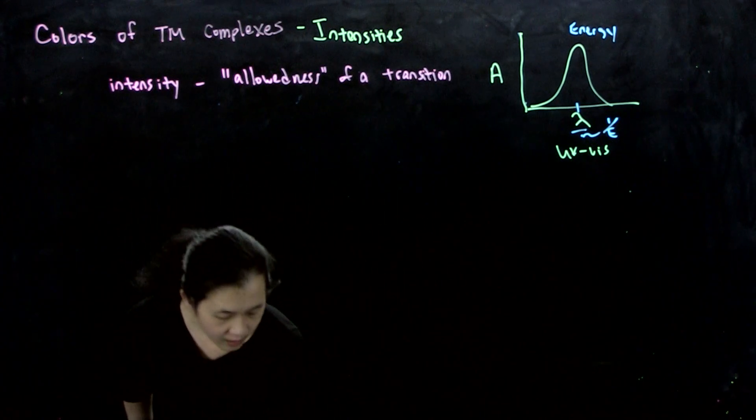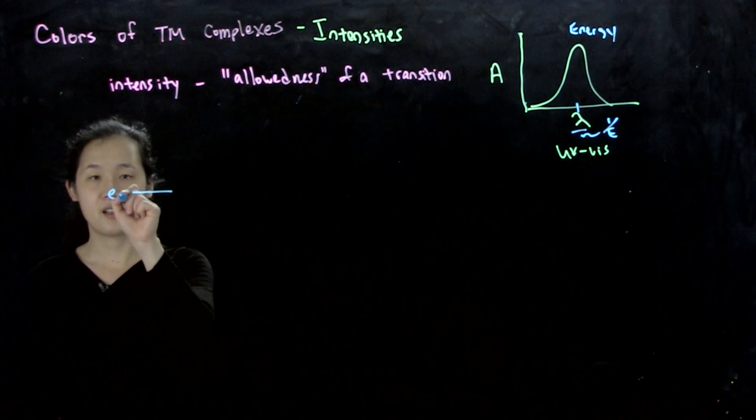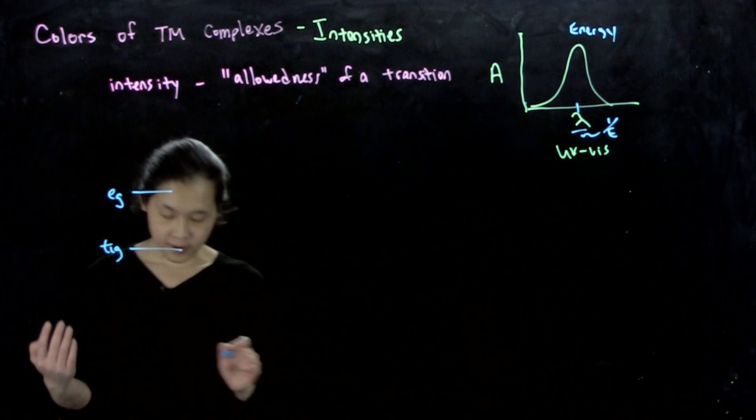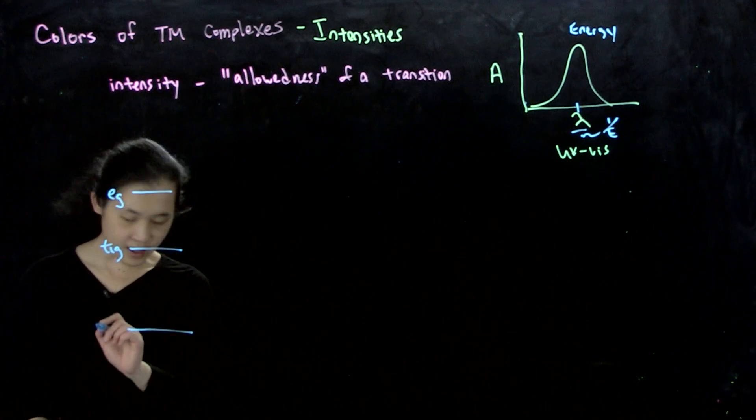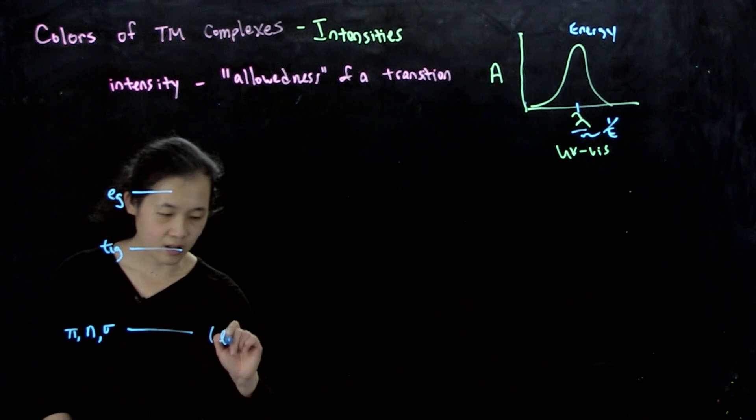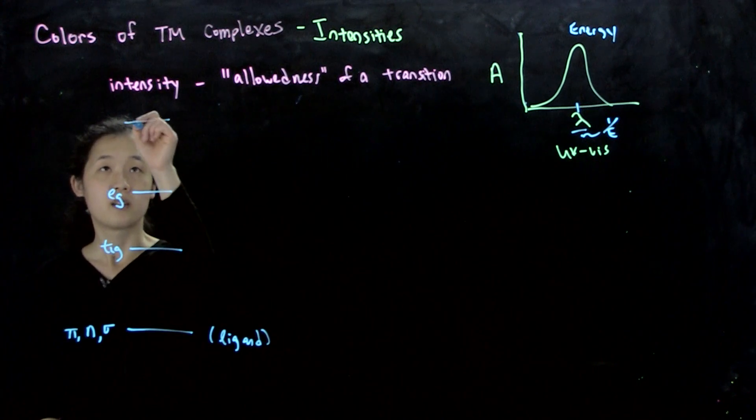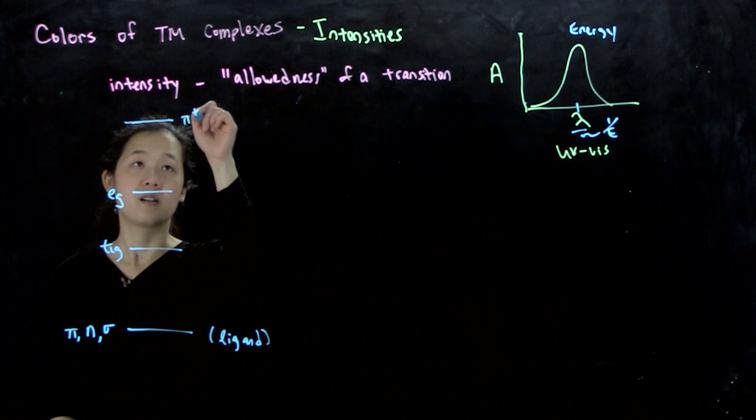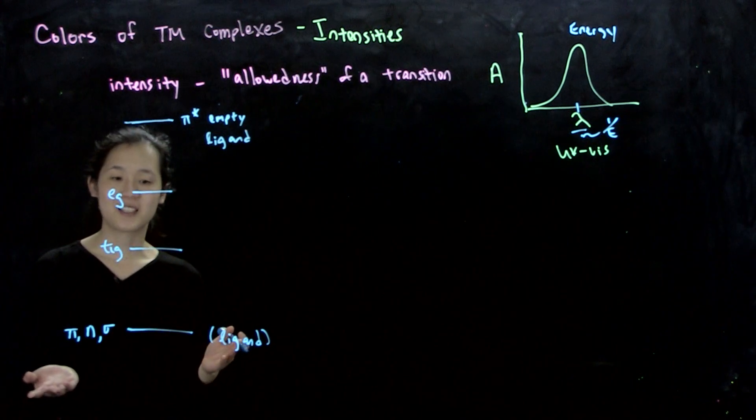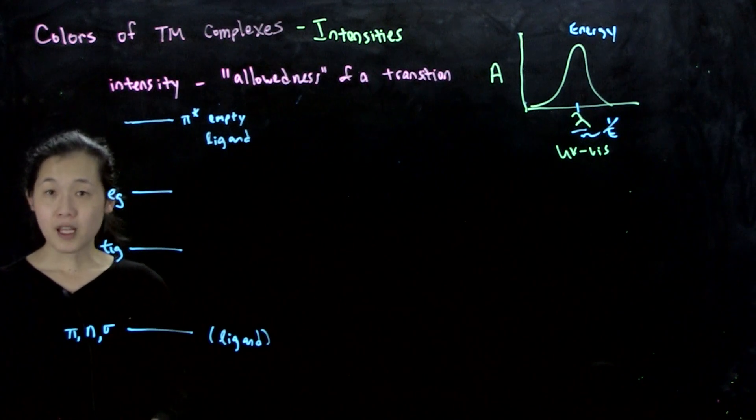So in your metal complex, you have sets of orbitals. I'm just going to draw one line for each. So here's our eg, here's our t2g. These could be filled or these could be empty. Below that, we have our filled ligand-centered orbitals. So these could be like lone pairs, or they could be sigma. They could even be pi. And then above that, we could have empty ligand orbitals like pi star. So this is the anatomy of your complex. You have filled ligand orbitals, maybe filled, maybe empty d orbitals, empty ligand orbitals. So as a result, we have different types of transitions.